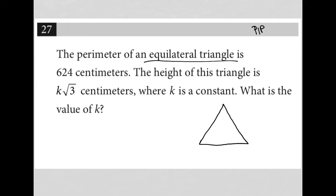And regardless of how I draw it, basically it means that each side is equivalent. So if the perimeter is 624, and the perimeter just simply means the sum of all three sides, I know that an equilateral triangle has all three sides equal to each other. So I can just take 624 and divide by 3.